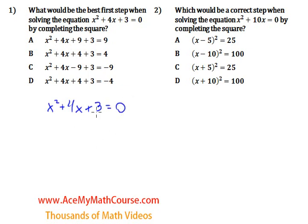Well, to complete the square we need to add a number to both sides of the equal sign. That will be this number, the 4, divided by 2 squared. 4 divided by 2 is 2, 2 squared is 4.